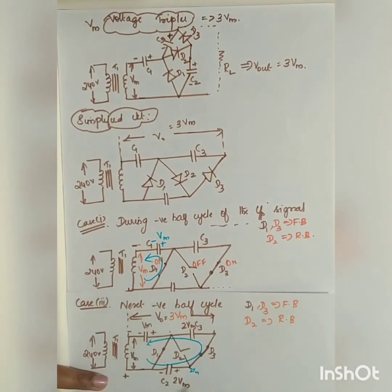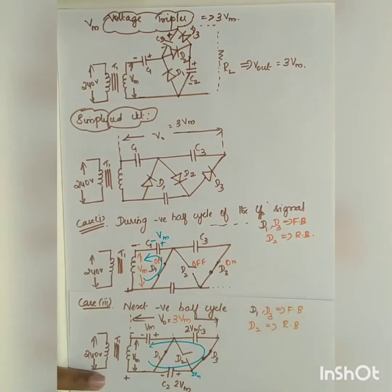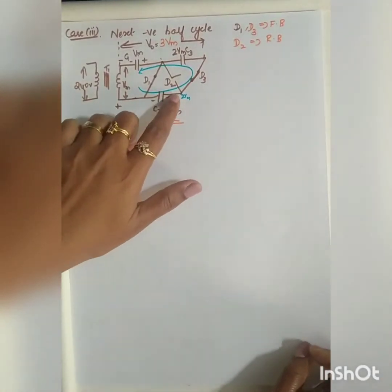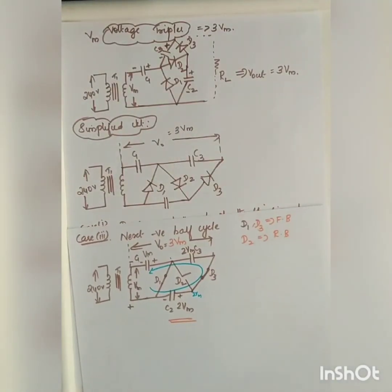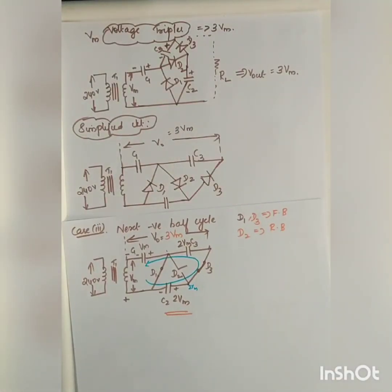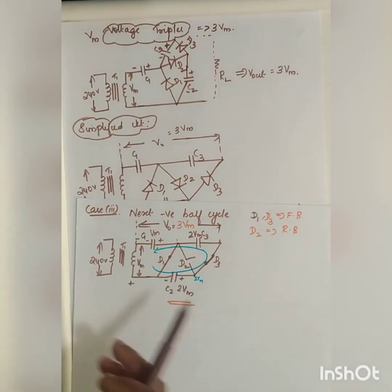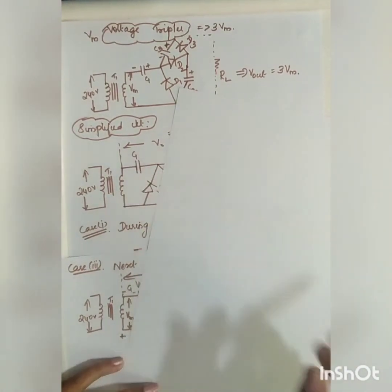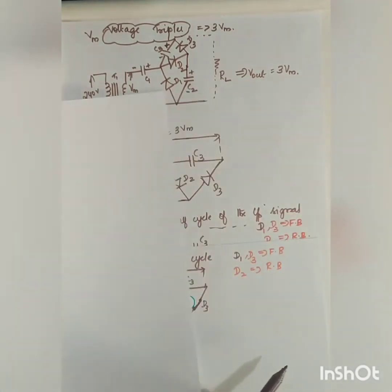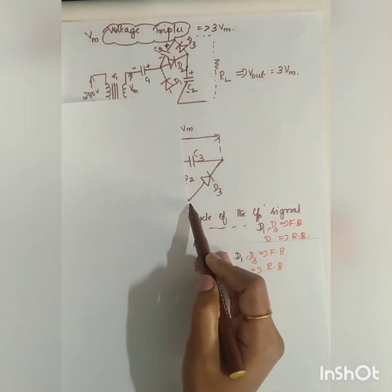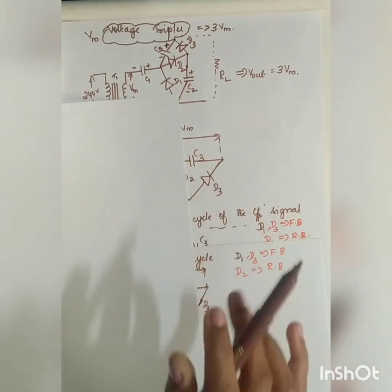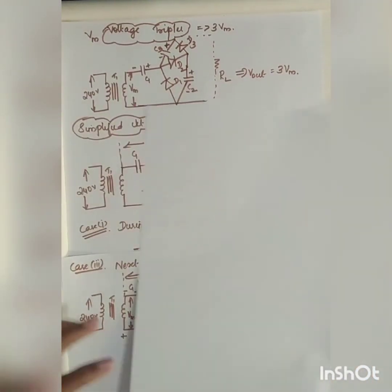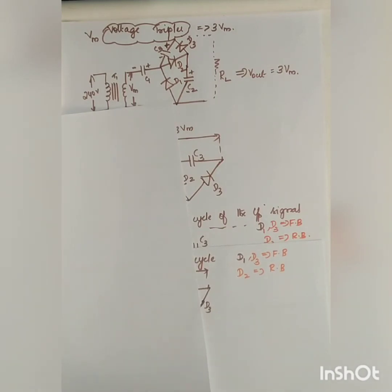As you can see, the third cycle circuit is similar to the first cycle — the pattern repeats. The second and third cycles mirror the first and second cycles respectively.